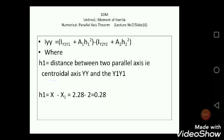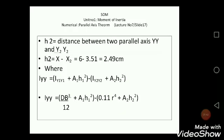It is a geometry part. h2 = distance between two parallel axes Y1 and Y2. This Y2Y2 is the vertical centroidal axis passing through the centroid of semicircle.